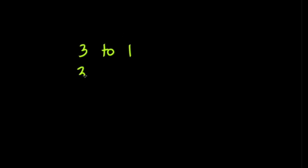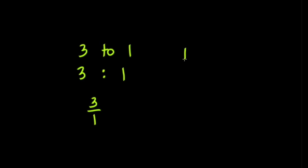You can use a colon, which would look like this. Or you can write a ratio as a fraction, which would be 3 over 1. Proportions are just equal ratios. So for instance, the ratio 1 over 2 equals 2 over 4 — this would be a proportion.